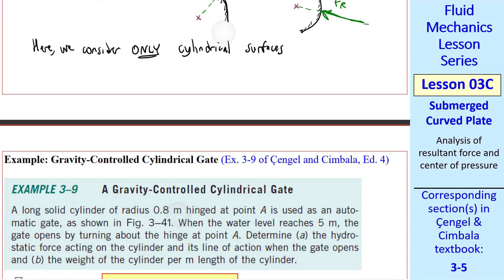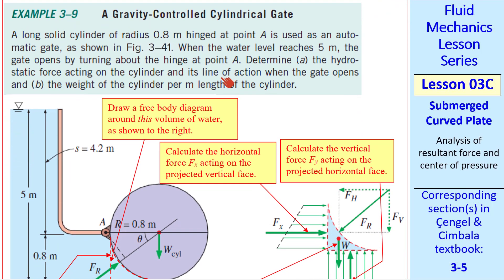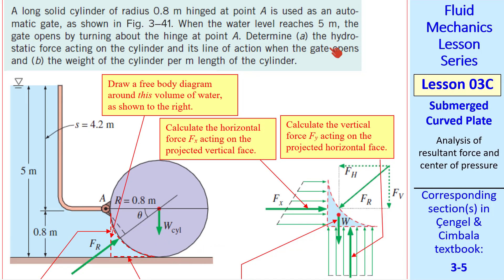This should be more clear when we do an example problem. This is Example 3.9 of our textbook — a gravity-controlled cylindrical gate. This is a practical problem where you have a gate composed of a cylinder of some weight, holding back water of some depth. It's designed to release the water when the water level rises above a certain value — here, 5 meters. There's a hinge here, and if this resultant force is large enough, it will lift this cylinder off the ground a little bit, allowing the water to flow through. We want to determine the net force acting on the cylinder under these conditions, and the weight of the cylinder per meter length into the page.